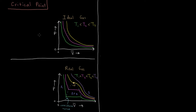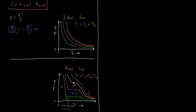For the ideal gas, PV equals nRT, or P times V-bar equals RT, so the pressure as a function of molar volume is P equals RT over V-bar. This is a directly inverse relationship, so P is directly proportional to 1 over V. If we take the derivative of pressure with respect to molar volume at constant temperature, that's going to be equal to minus RT over V-bar squared, and you'll notice this is not equal to zero at any point except for V-bar equals infinity.